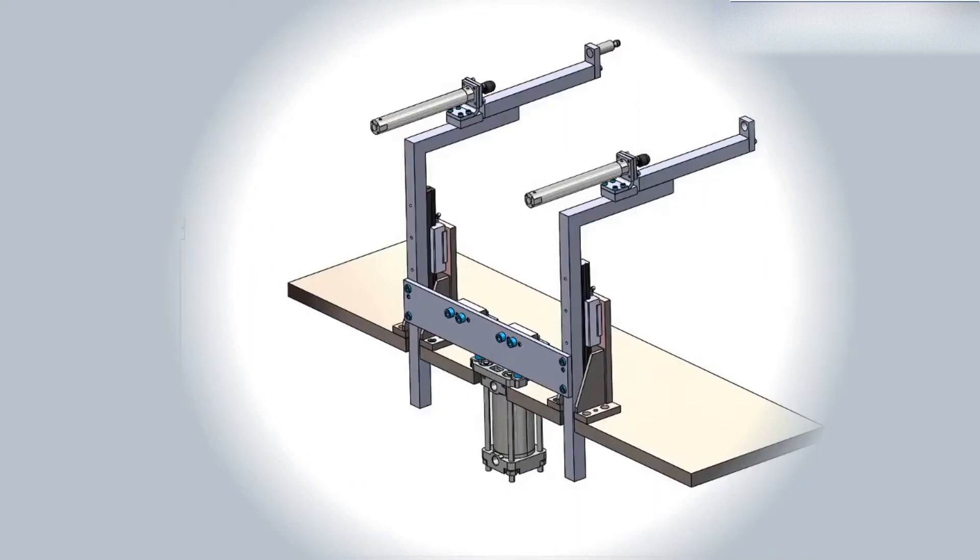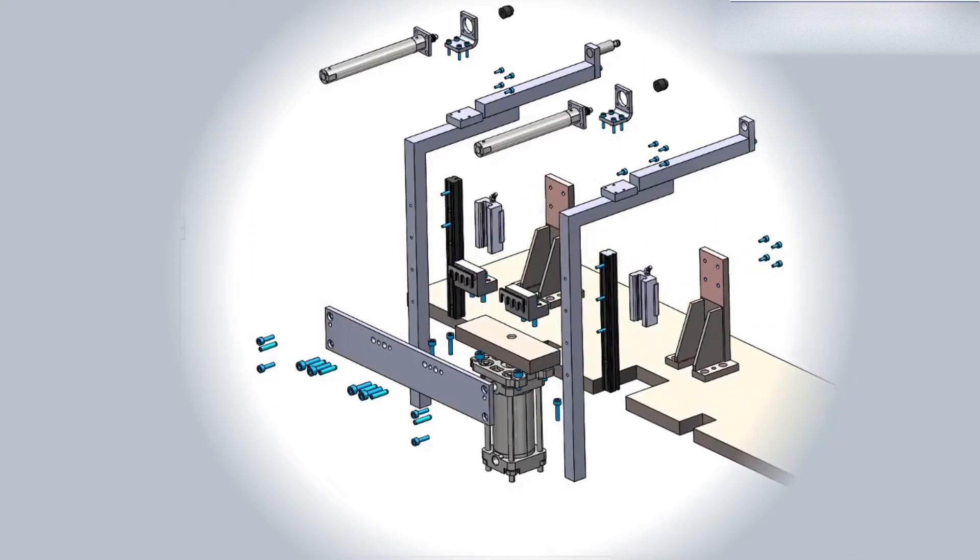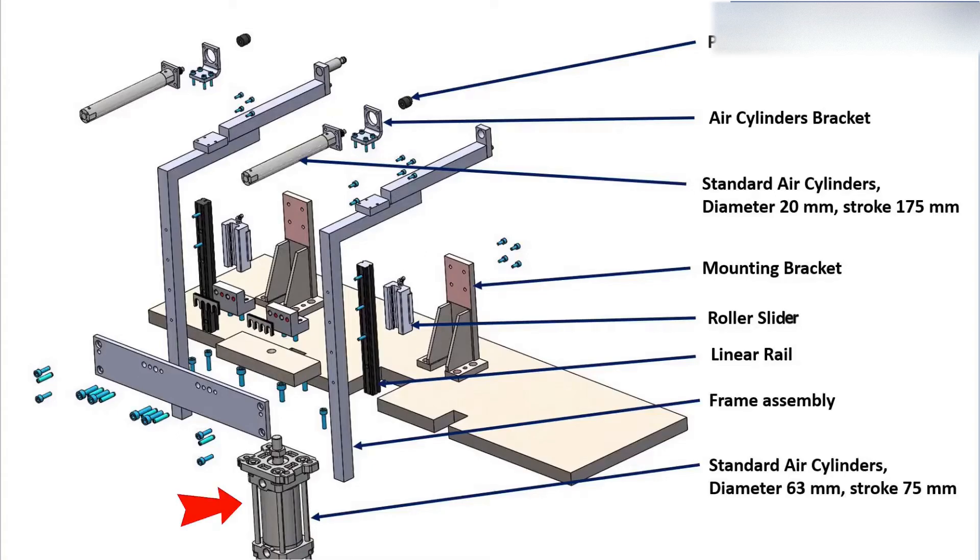Now we can check the welding fixture's main components. Standard air cylinders: diameter 63 mm, stroke 75 mm. Standard air cylinders: diameter 20 mm, stroke 175 mm.